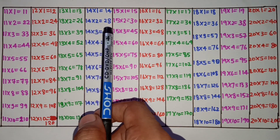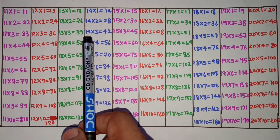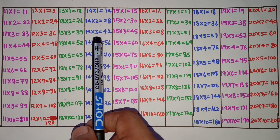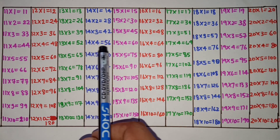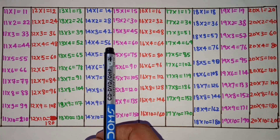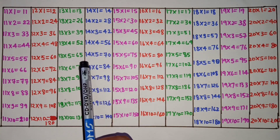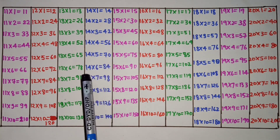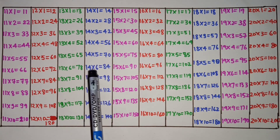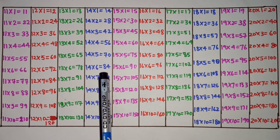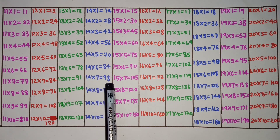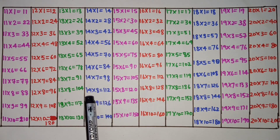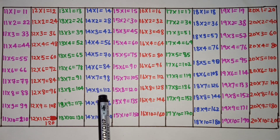14 ones are 40, 14 twos are 28, 14 threes are 42, 14 fours are 56, 14 fives are 70, 14 sixes are 84, 14 sevens are 98, 14 eights are 112.